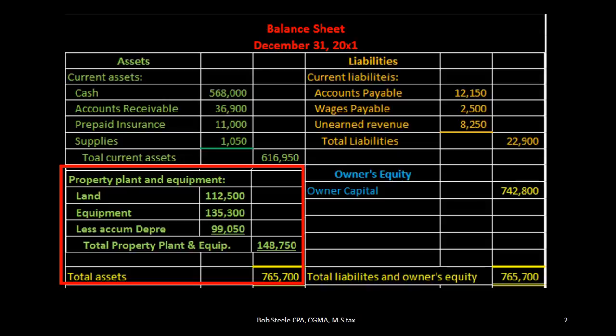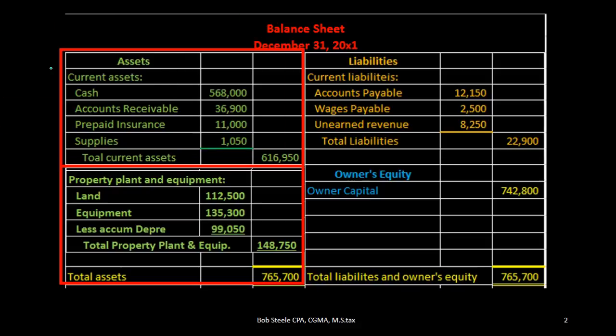In this lecture we're going to put together the section of the balance sheet of property, plant and equipment from the trial balance. Property, plant and equipment will be part of the assets — the subcategory of assets. We talked last time about the creation of the current assets and now we'll be moving on to property, plant and equipment, which will then sum up everything for total assets.